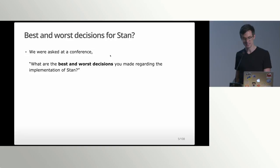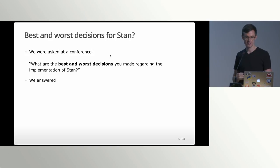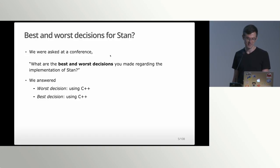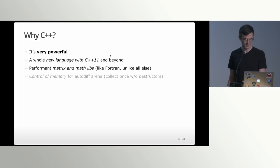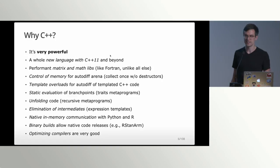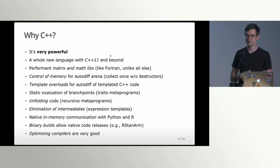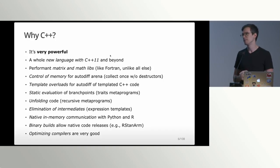When it says 'we,' it means Bob and someone else. Someone asked Bob what the best and worst decisions he made about Stan were, and he was saying the worst was that he chose C++ and also the best. C++ lets you do a lot of computation at compile time, even if it's a bit hairy looking. It also has one of the best matrix libraries out there, so we don't have to do a lot of that work.